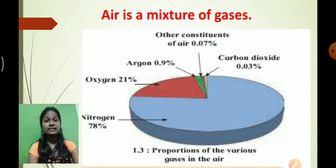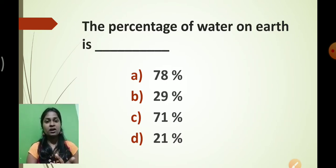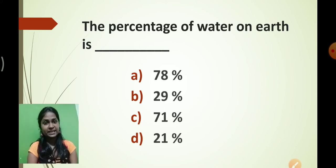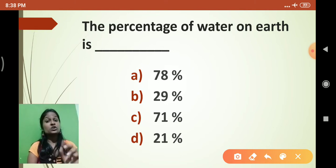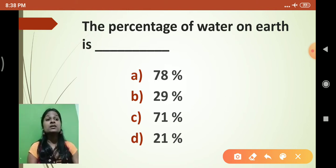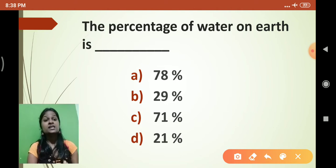Now let's look at the type of questions which will be asked in the exam. This is just an example. Four options will be displayed in front of you and out of them you have to select the correct option. You don't have to type anything - just read the question correctly and click on the correct option.